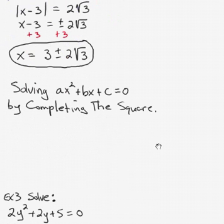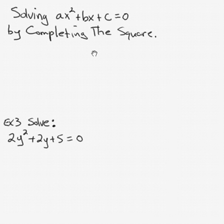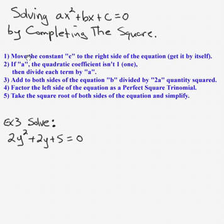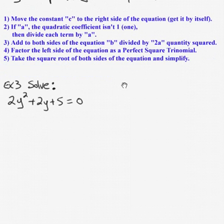This process is called completing the square. To summarize: first, take the constant c and move it to the right side of the equation. Second, if the coefficient of x squared is not 1, divide everything through by that coefficient. Third, add to both sides the coefficient of x to the first power divided by 2, quantity squared. Fourth, factor the left side as a perfect square trinomial. Fifth, take the square root of both sides to solve.